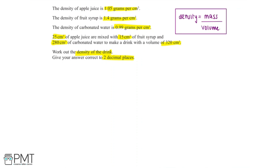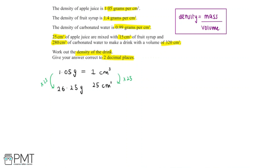We can start by finding the total mass of the drink by finding the mass of the apple juice, added with the mass of the fruit syrup, and added with the mass of the carbonated water. The density of apple juice is 1.05 grams per centimetre cubed, meaning for every 1.05 grams of apple juice, its volume is 1 centimetre cubed. Since 25 centimetre cubed of apple juice is in the drink, we multiply by 25 to find that there are 26.25 grams of apple juice in the drink.